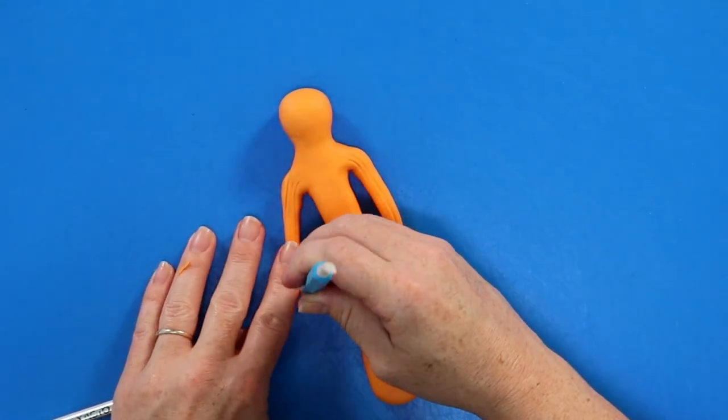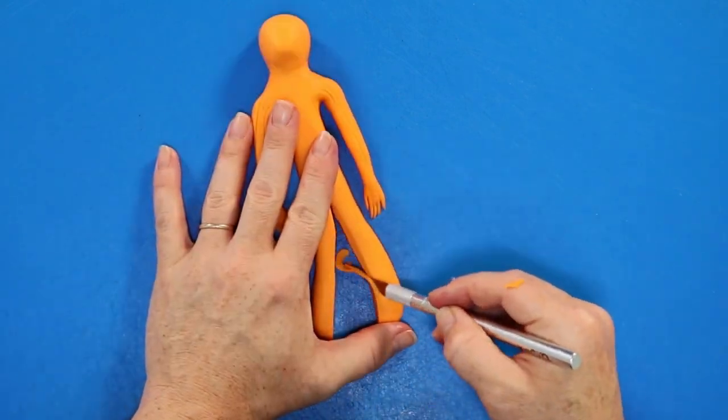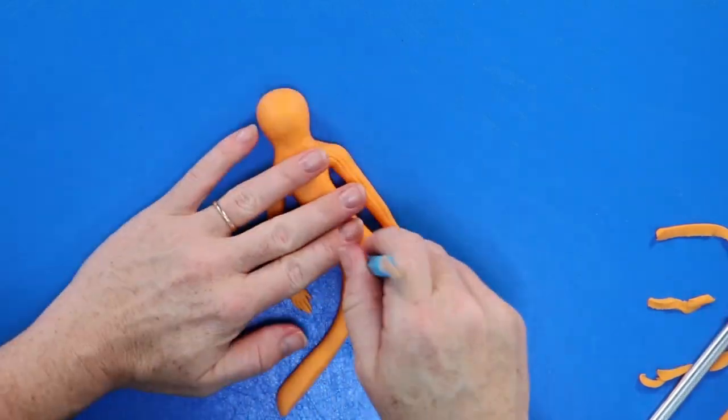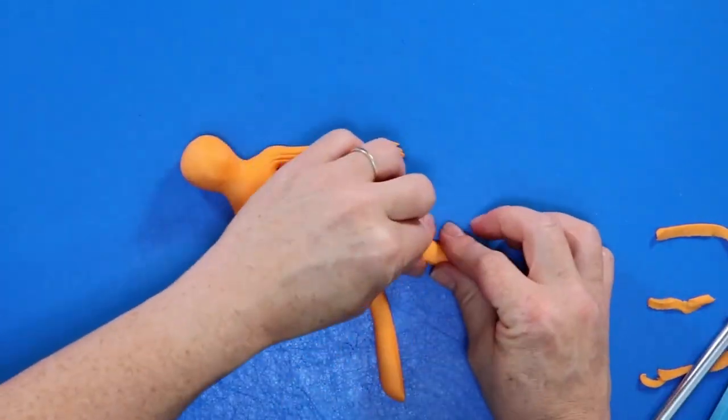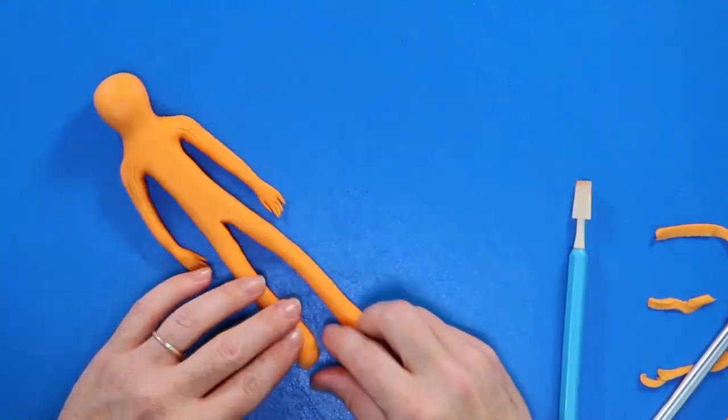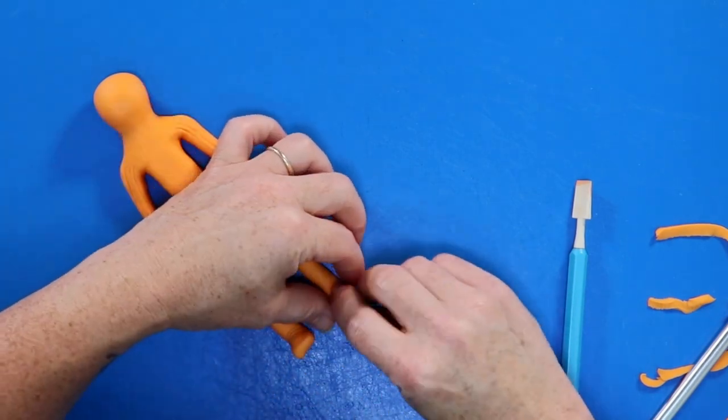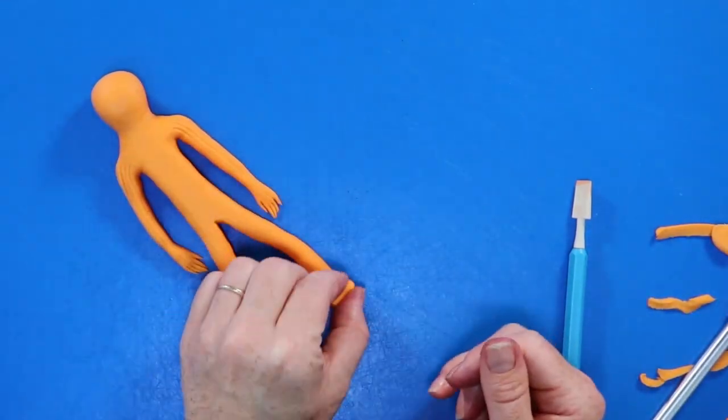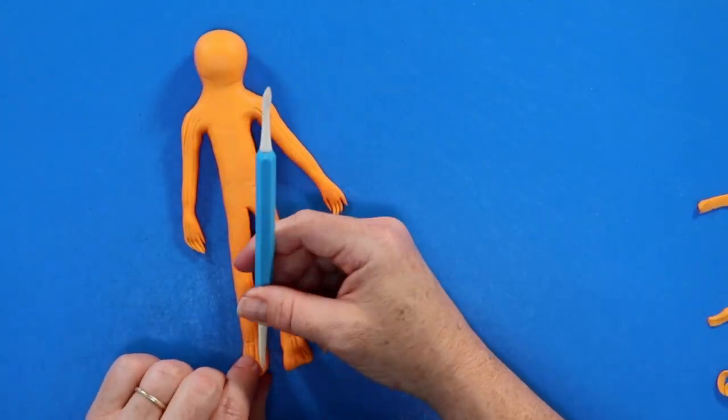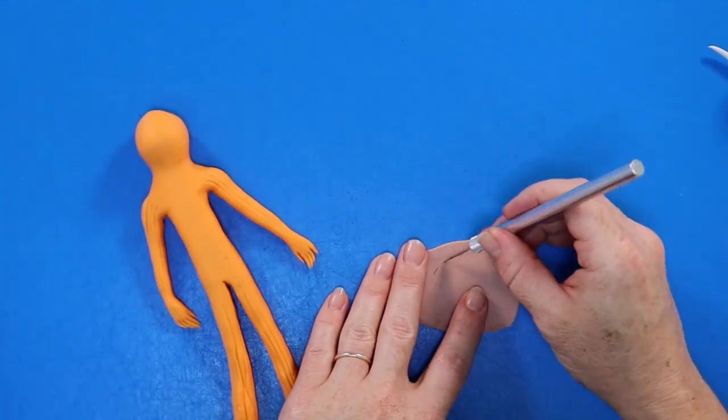Now that the arms are finished we're gonna start with the legs and we're gonna make those in a very similar way. So I've separated the legs by making a cut straight down the center using my exacto knife, and now we're just going to smooth out those edges a little bit and elongate the legs to make them a bit skinnier. Then we're gonna pinch off any excess and shape some feet. And he is a fish so he doesn't have toes so obviously we're gonna make his feet look more like fins. So I'm taking my dresden tool and creating some lines to give that look of fish skin.